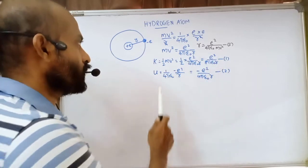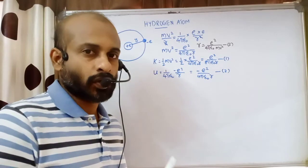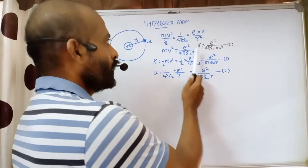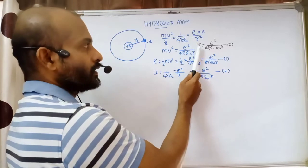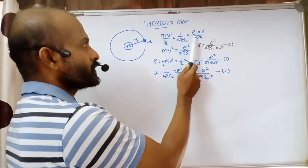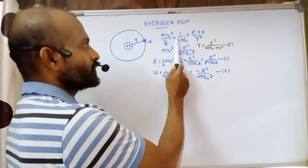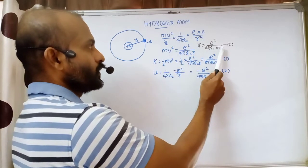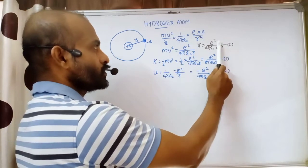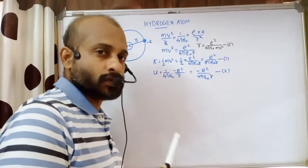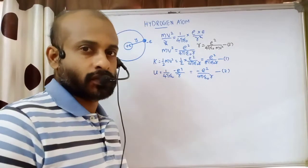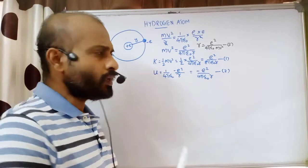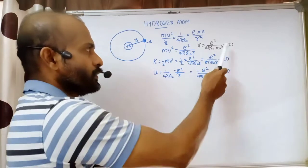From this equation we can extract the radius r. r is equal to e squared by four pi epsilon zero mv squared. This is equation number two for the radius, which we will use afterwards in a few steps.